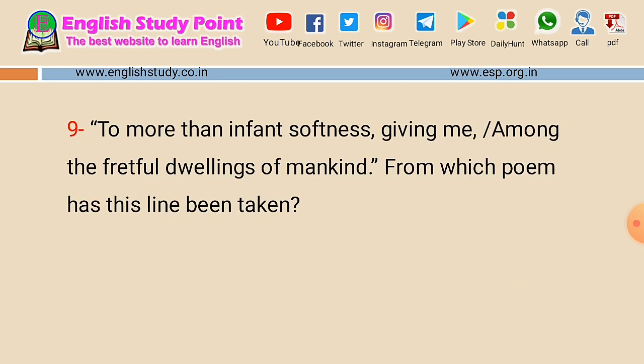Question number nine: 'to more than infant's softness giving me' — you should focus on the term 'infant's softness.' Words like infant and childhood point toward the Prelude. The full line is: 'the infant's softness giving me, among the fretful dwellings of mankind.' This important line is from the Prelude.